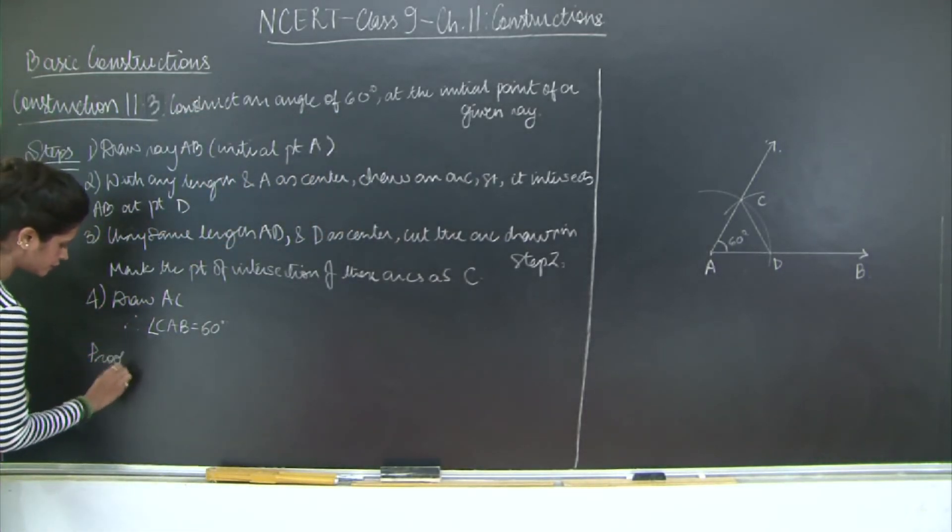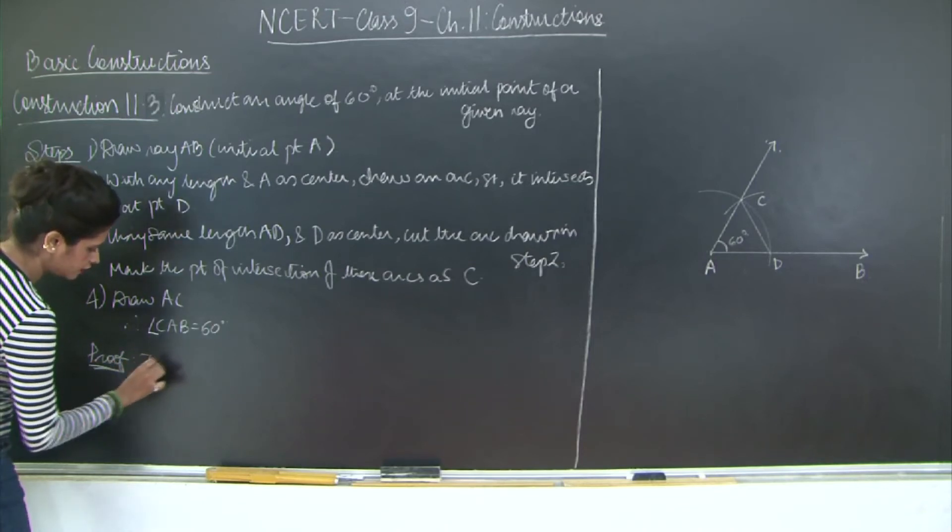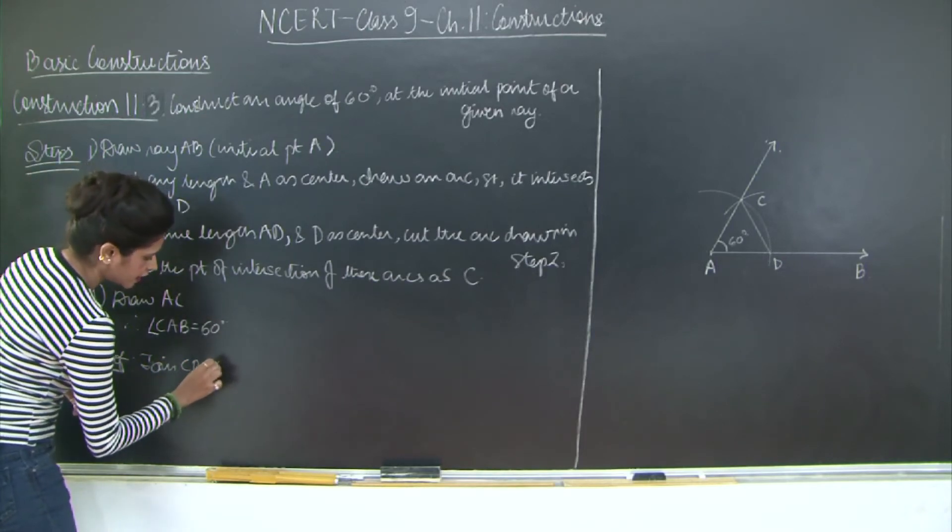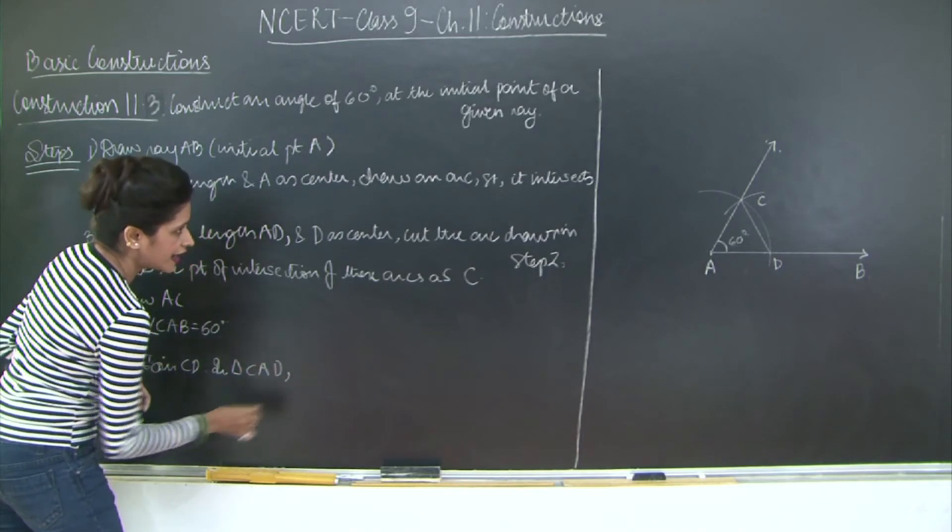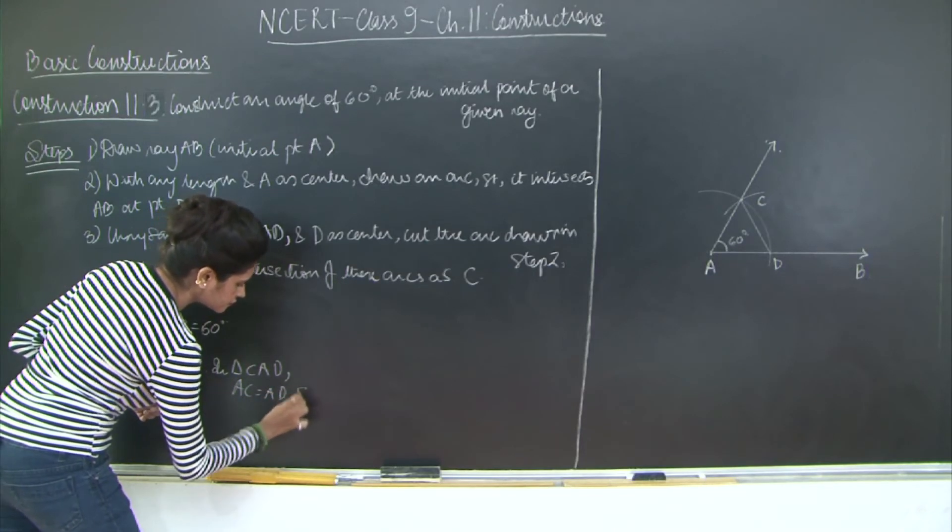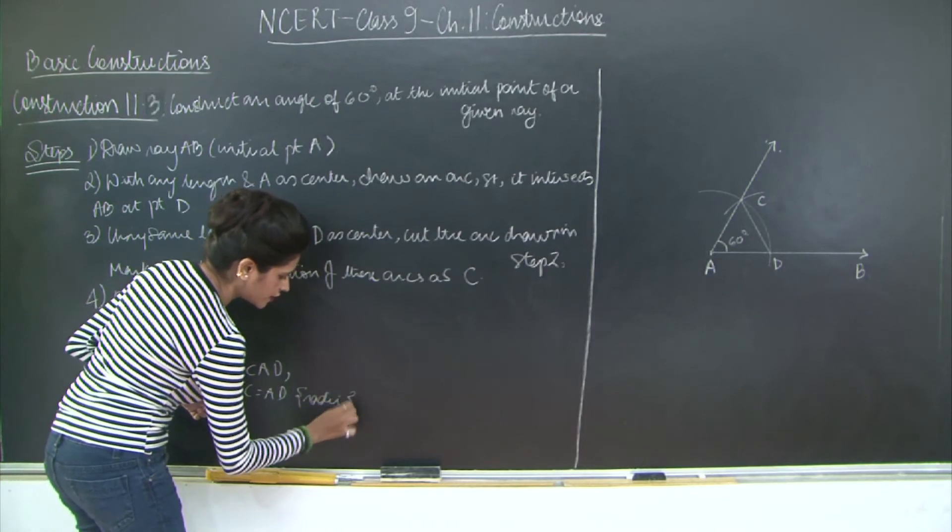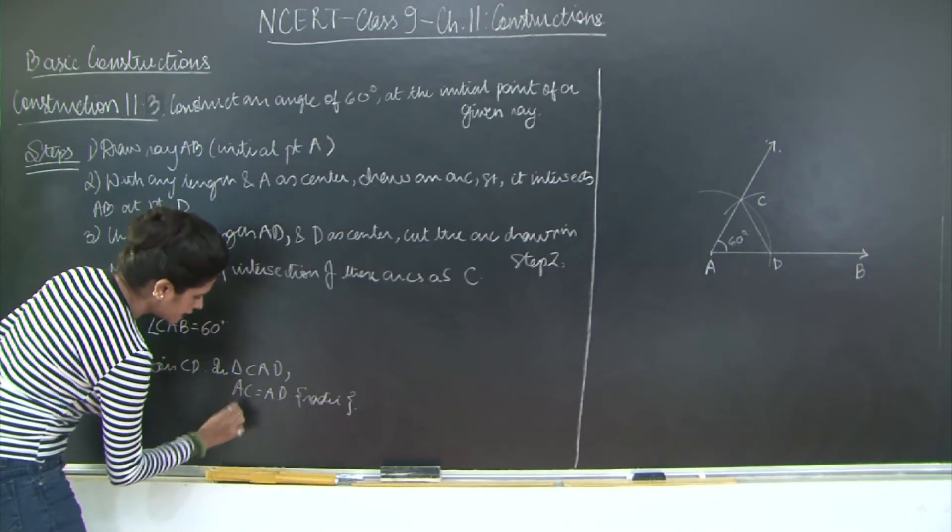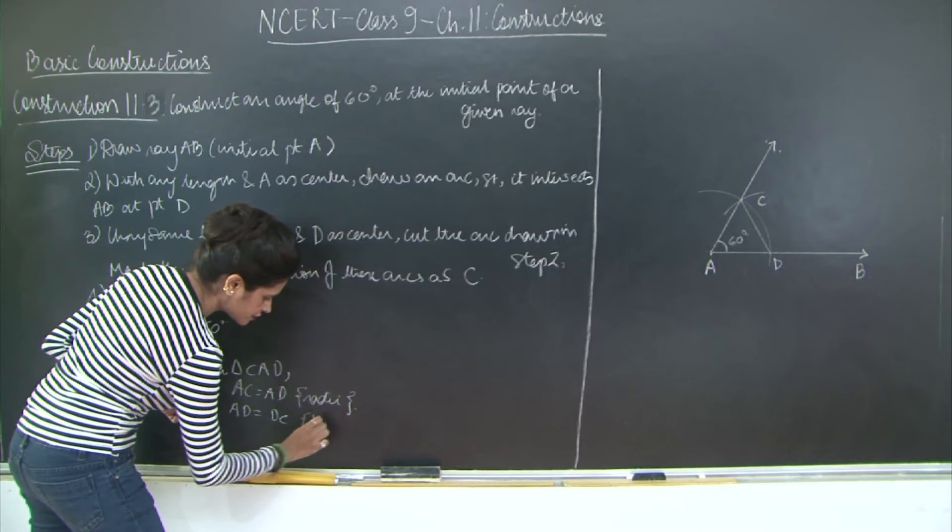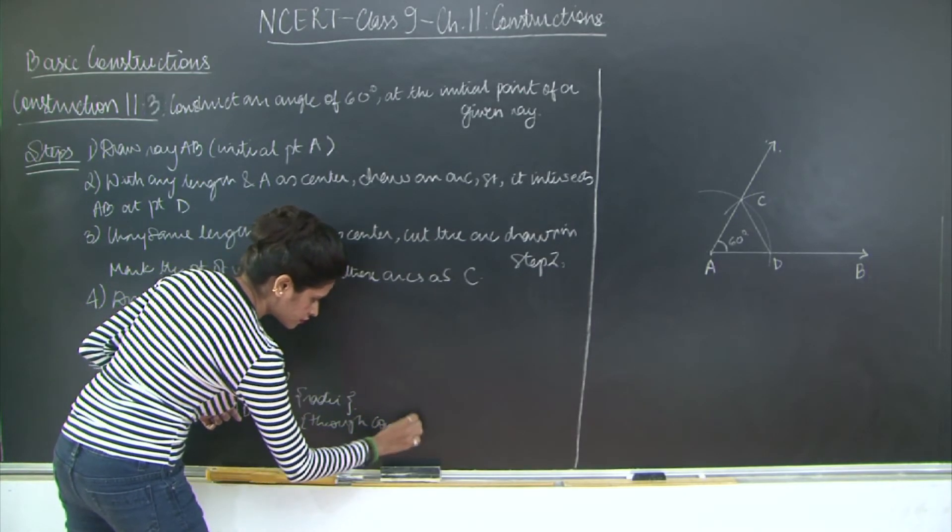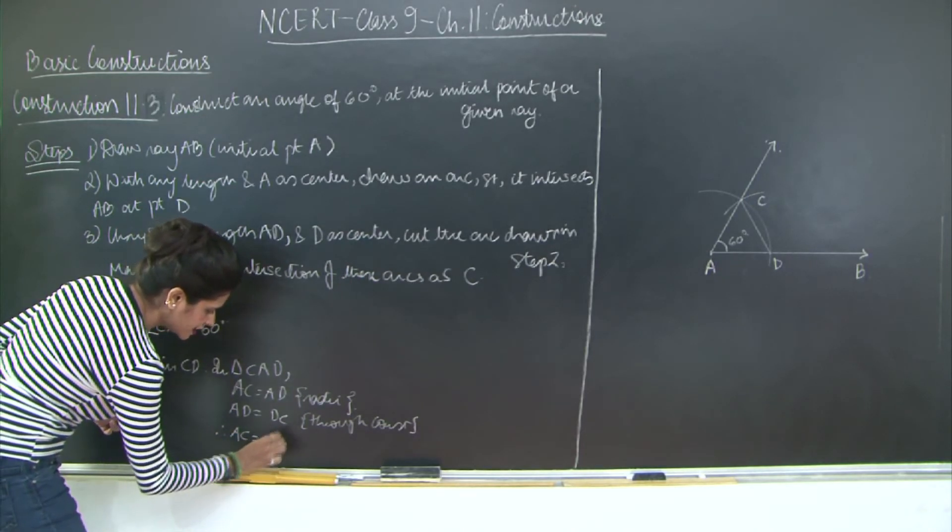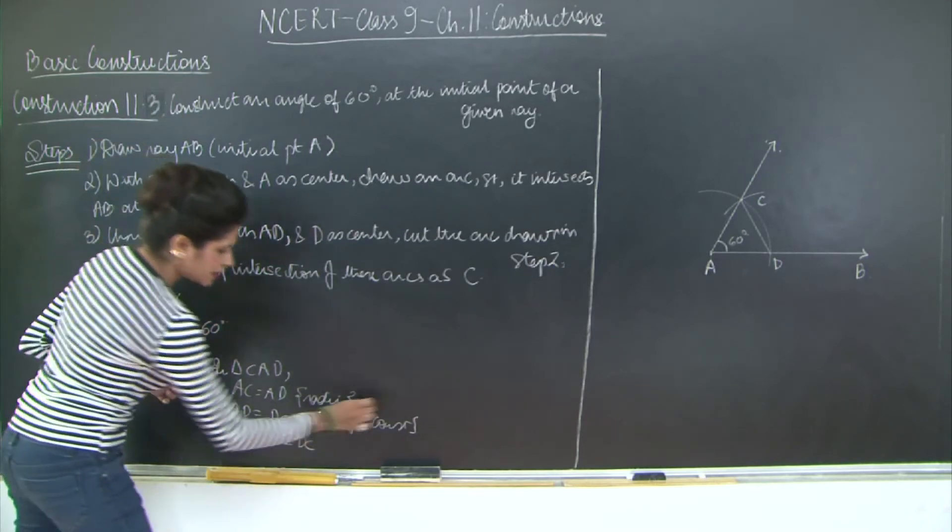Proof: Join CD. In triangle CAD, I have AC is equal to AD, radii of same circle. And then I have AD is equal to DC through construction. Therefore I have AC is equal to AD is equal to DC.